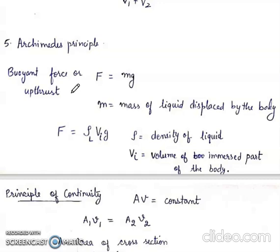Buoyant force or upthrust, F is equal to mg. M is the mass of liquid displaced by the body. Or it will be rho L v i g. Rho L is the density of the liquid. V i is volume of the immersed part of the body.